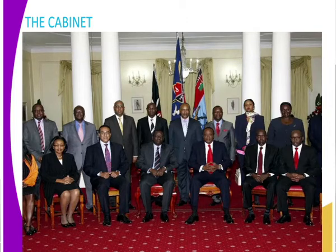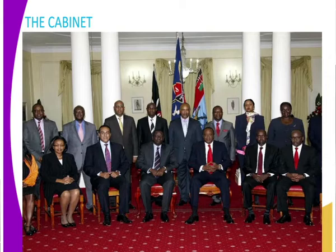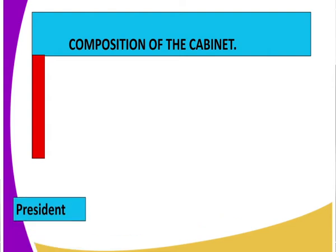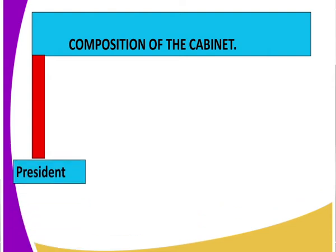Now let us look at the composition — what does it comprise of? The first person we can clearly notice is the president. Composition of the cabinet: we first have the president, and we said the president is the one who chairs the cabinet. When we have cabinet meetings, it is the president who chairs. So one composition of the cabinet is the president.